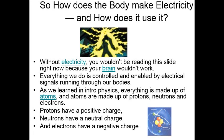Without electricity you wouldn't be listening to me right now or watching me or reading the slide in front of you. Everything we do is controlled and enabled by electrical signals running through our bodies. As we learn in physics, everything is made up of atoms, and atoms are made up of protons, neutrons, and electrons. Protons are positively charged, neutrons are neutral, and electrons have a negative charge.